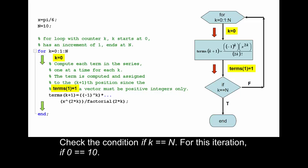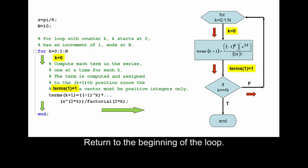Check the condition if k == n. For this iteration, if 0 == 10, the condition is found to be false. Return to the beginning of the loop.